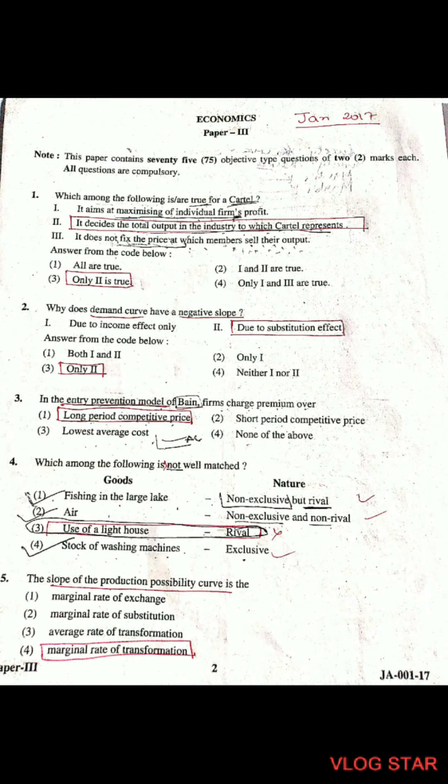Hello everyone. In this video we will solve January 2017 Paper 3 of Economics. Question number 1: Which among the following is or are true for a cartel? Only the second statement is true about a cartel — it decides the total output in the industry which the cartel represents. The main point is total output.